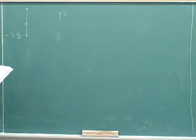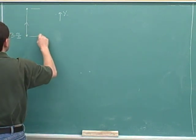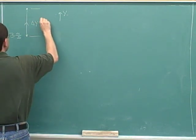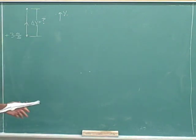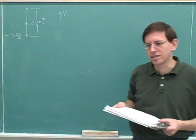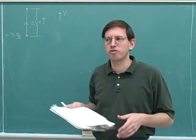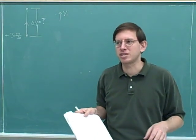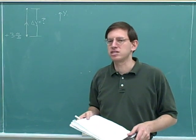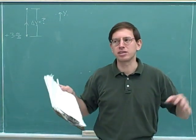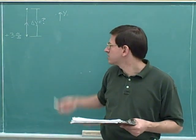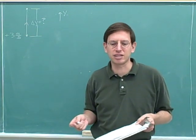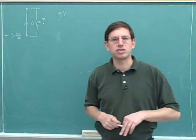The question is, how high does it go? We can indicate that they're asking for the displacement. Actually, that's not quite right — this is a little technicality. They're not quite asking us for the displacement, because the displacement is a signed number. It would be kind of weird to say it goes positive three meters high. When someone asks how high something is going, they're asking for the magnitude of the displacement — an unsigned number.